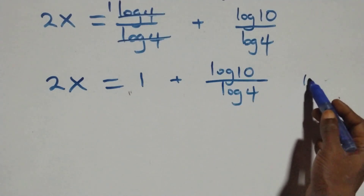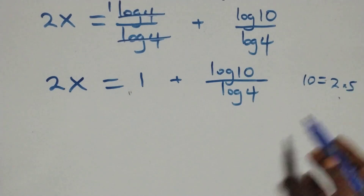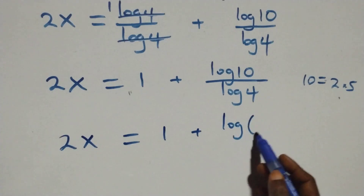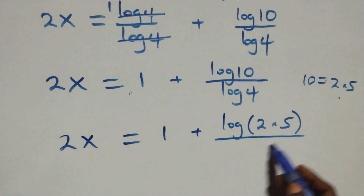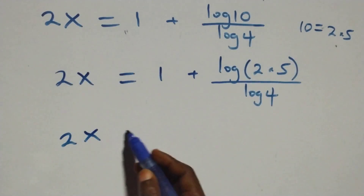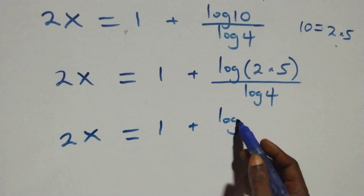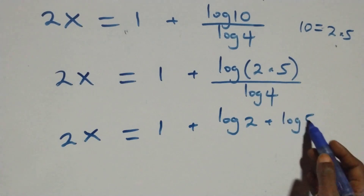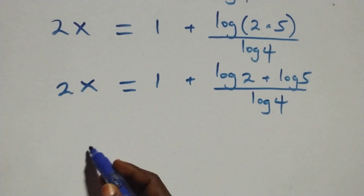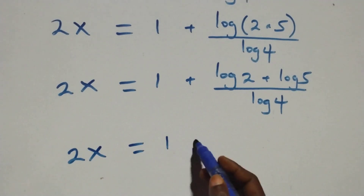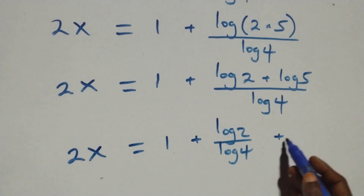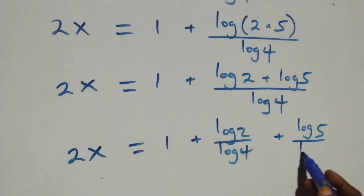Then also here, we can express 10 as 2 times 5. Then what we have here, we count 2x equals 1 plus log(2 × 5) over log 4. And this also follows the log product law, so we have 2x equals 1 plus (log 2 + log 5) over log 4. At this we separate into two fractions: 2x equals 1 plus log 2 over log 4 plus log 5 over log 4.